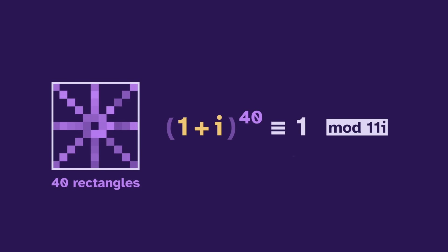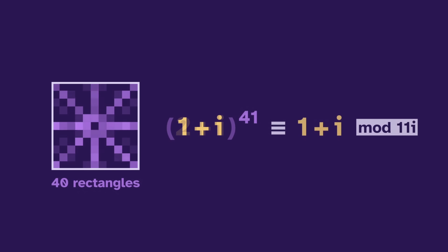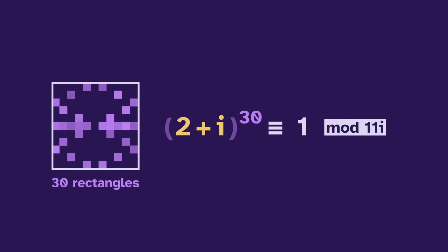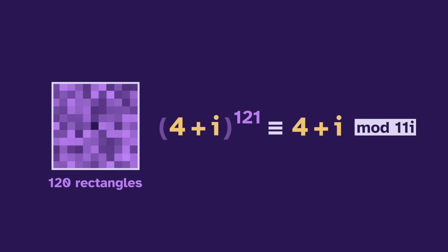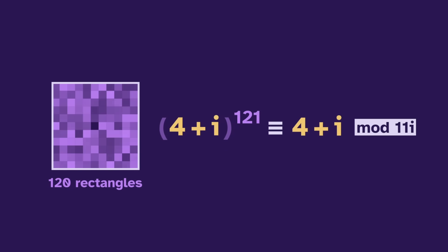So the following frame tells us that 1 plus i to the 41 equals itself. We can do the same thing with the 2 plus i pattern. This has 30 rectangles, so 2 plus i repeats after 30 powers, and therefore 2 plus i to the 31 equals itself. The 3 plus i pattern has 24 rectangles, so its 25th power equals itself. And the 4 plus i pattern has 120 rectangles, so 4 plus i to the 121 equals itself.